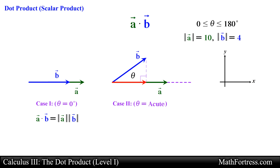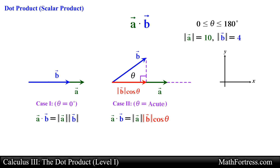Using right triangle trigonometry we can find the projection of vector b onto vector a by computing the x component of vector b. In this case it will be equal to the magnitude of vector b times cosine of theta. This expression represents the component of vector b along the direction of vector a. We then multiply this value by the magnitude of vector a to find the value of the scalar product. Notice that we end up with a numerical value — a scalar — not a vector. This is really important: the scalar product produces a scalar, not a vector.